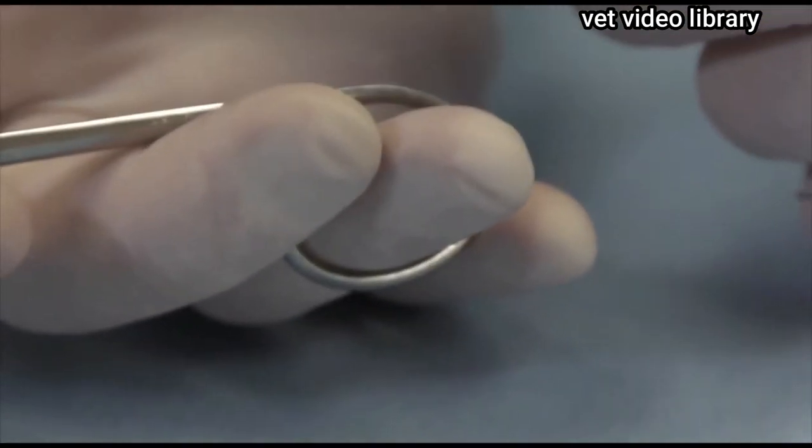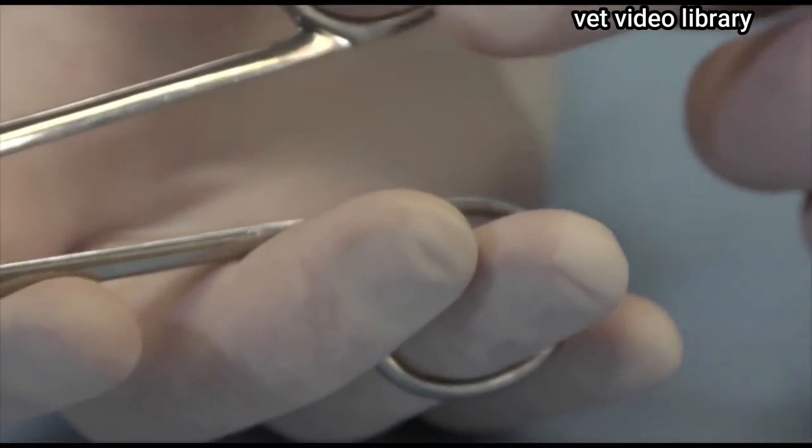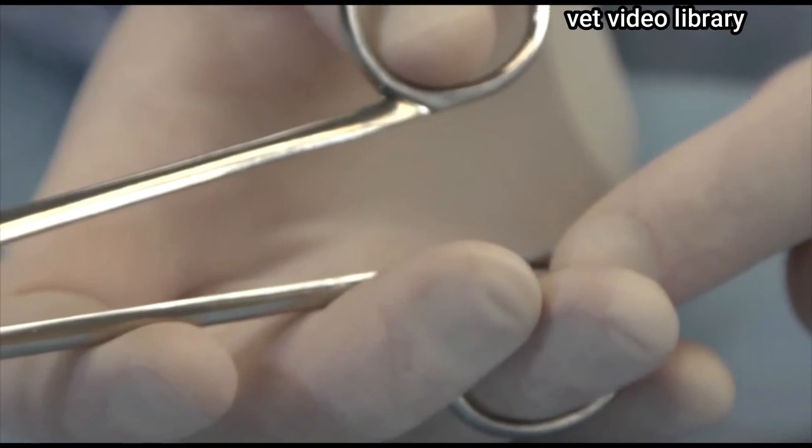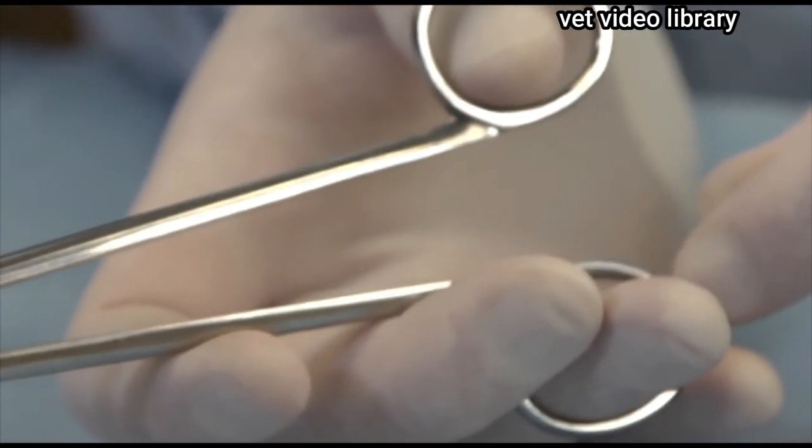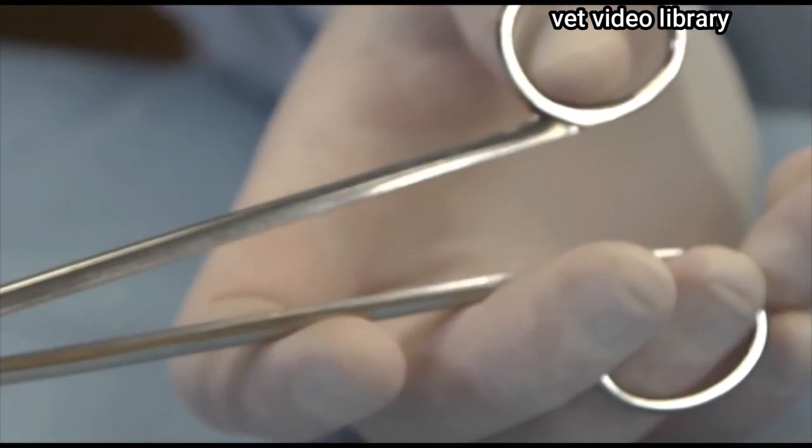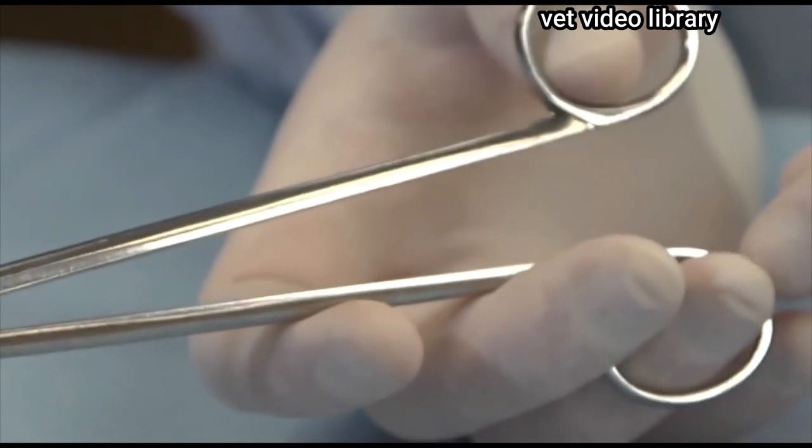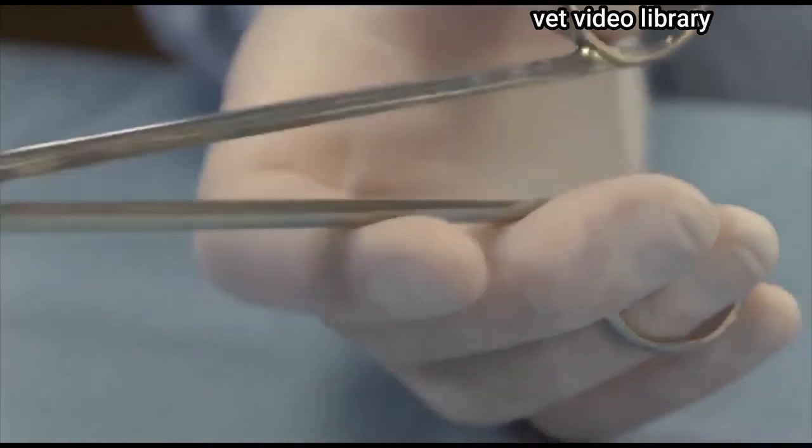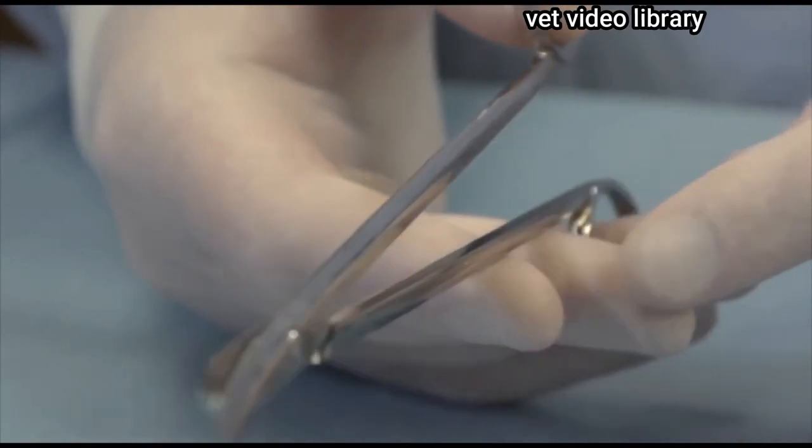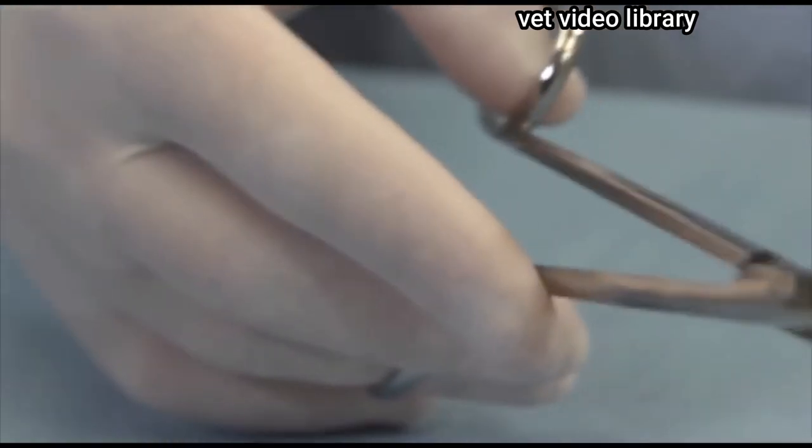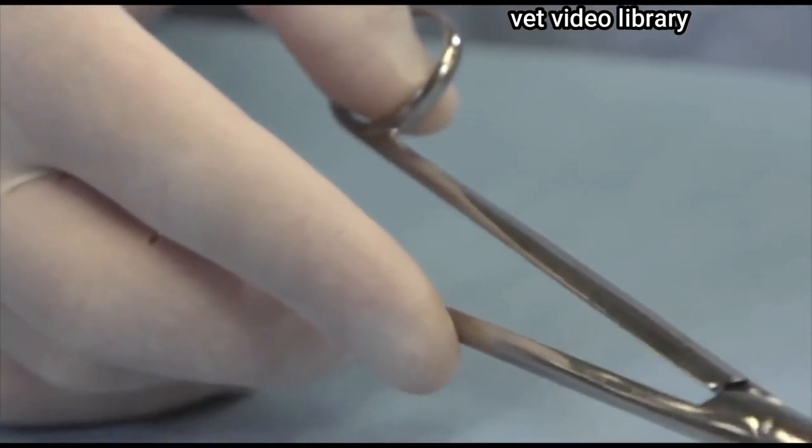It is held by placing your thumb in one ring and your ring finger in the other ring. You'll notice that the thumb and the finger are only inserted partway into the ring. And you'll also notice that my middle and index finger are used to balance and control the scissors.